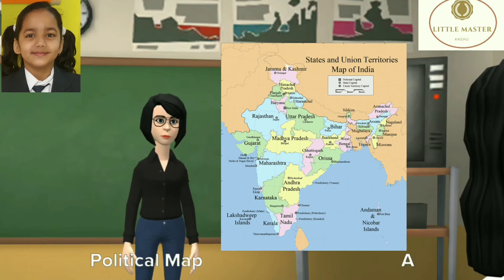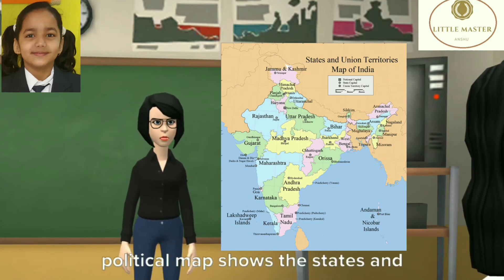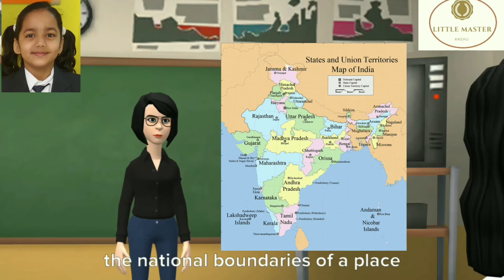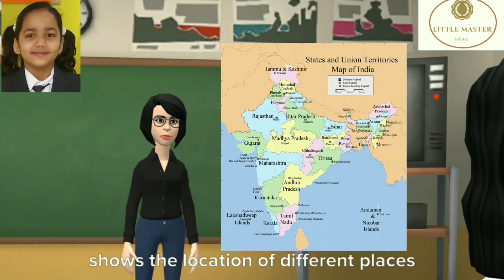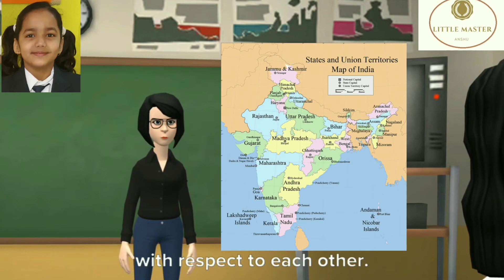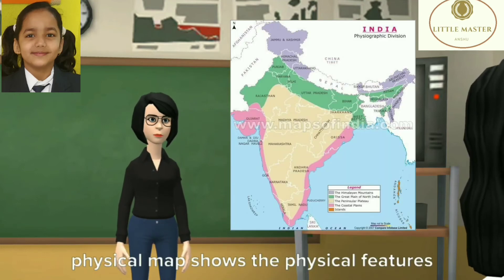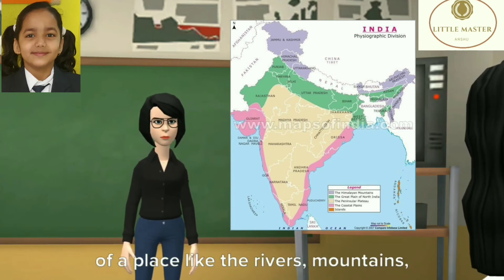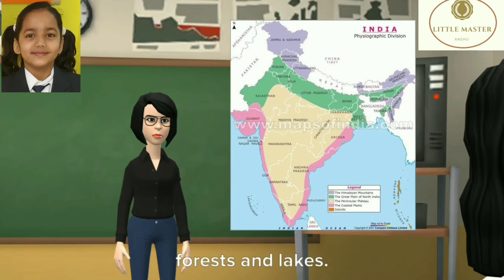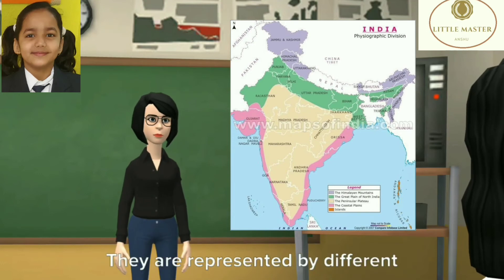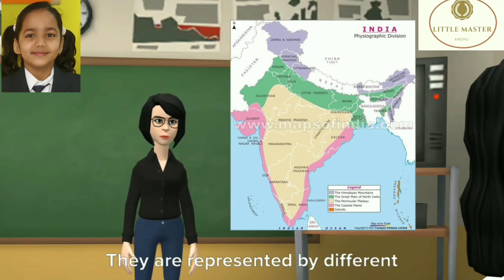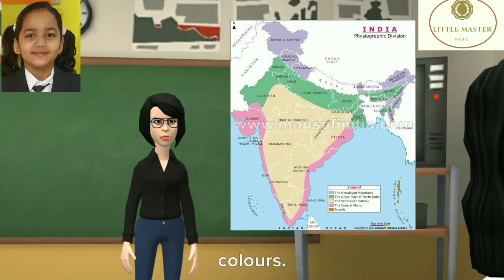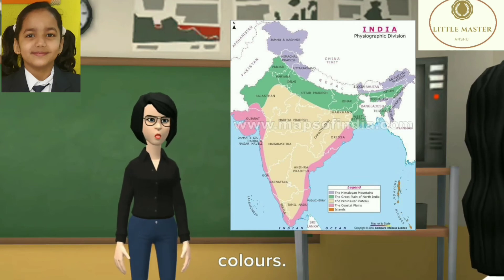Political map: A political map shows the states and the national boundaries of a place. It shows the location of different places with respect to each other. Physical map: A physical map shows the physical features of a place like the rivers, mountains, forests and lakes. They are represented by different colors.